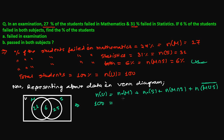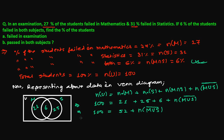All together that is 100. Just failed in math is 21, just failed in statistics is 25, failed in both is 6. So 100 equals 21 plus 25 plus 6 plus N(M∪S) complement. That gives us 52 plus N(M∪S) complement equals 100, so N(M∪S) complement is 100 minus 52, that is 48.